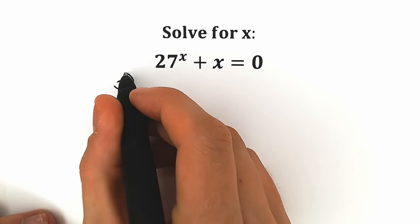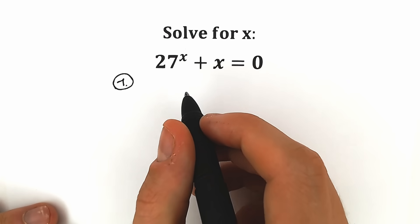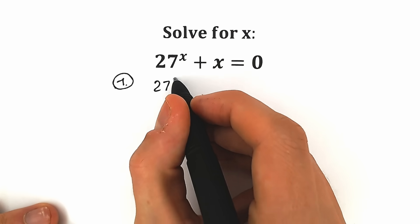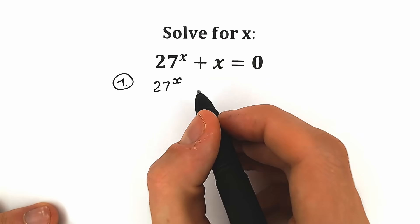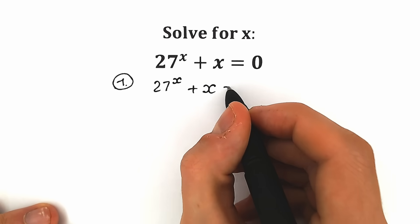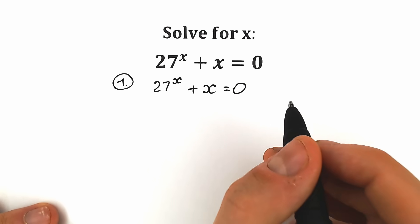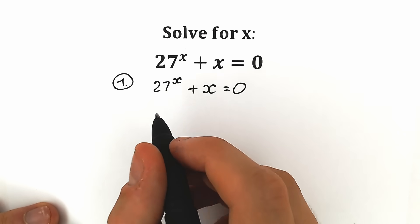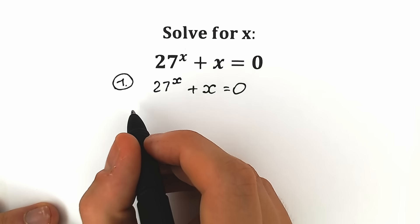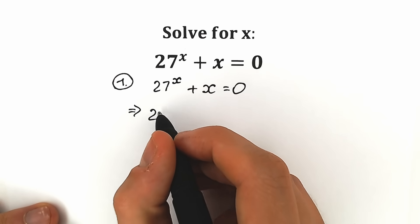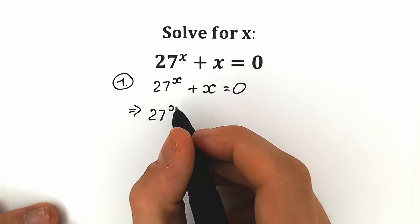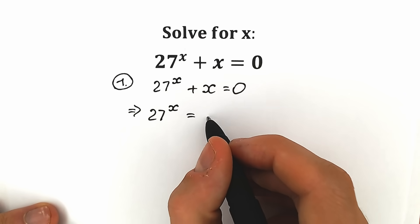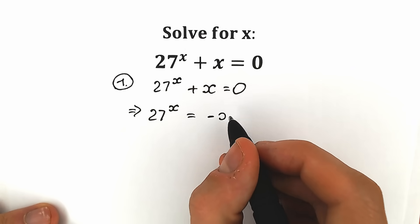So for the first method, how can we solve this question? Let's rewrite it. We have 27 to the power x plus x equals 0. Let's bring x to the right side with a minus sign. As a result, we have 27 to the power x equal to minus x.